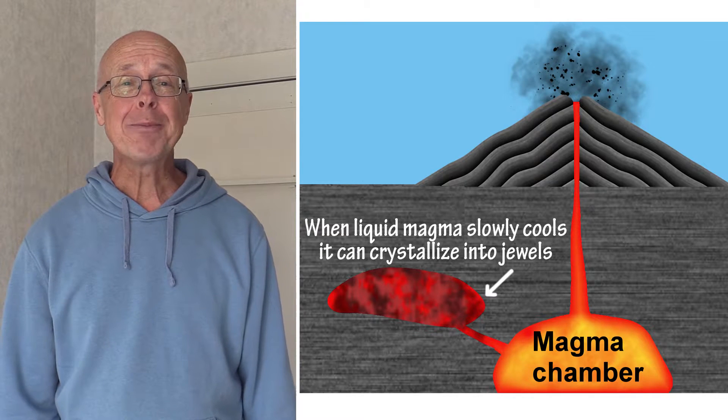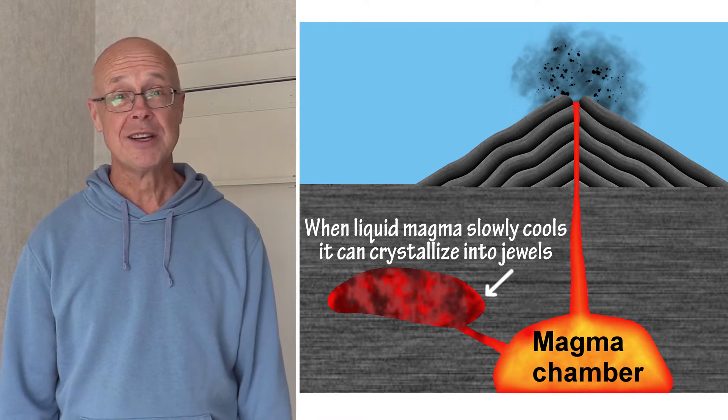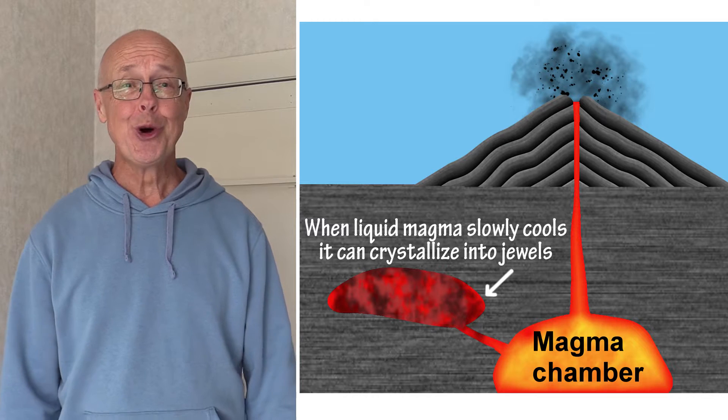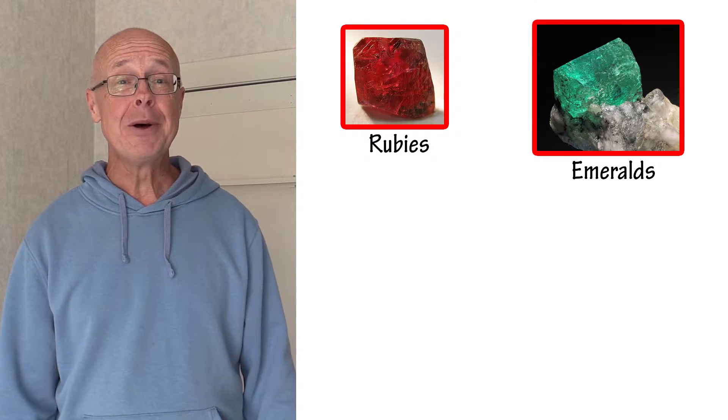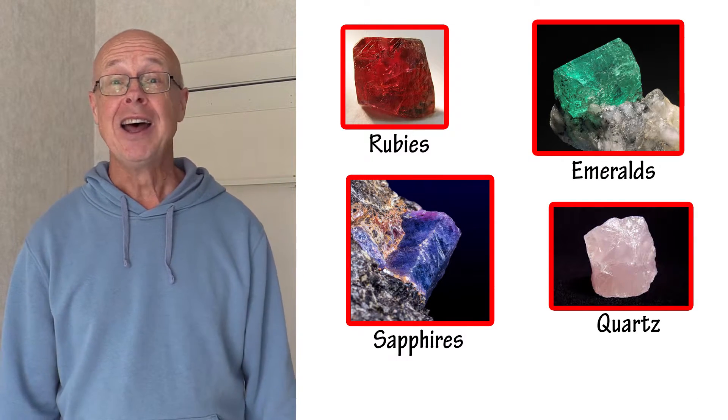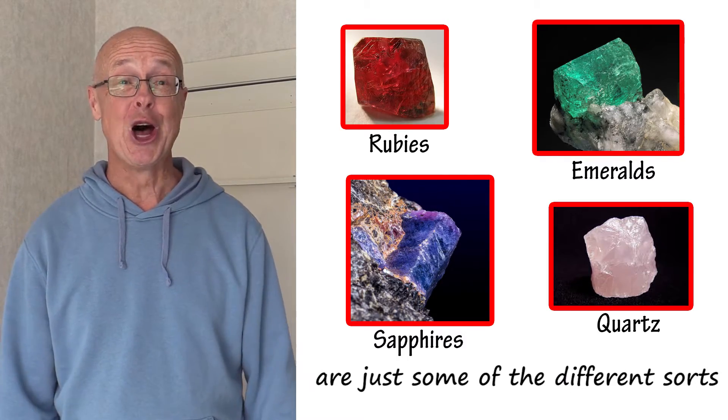When liquid magma slowly cools it can crystallize into jewels. Rubies, emeralds, sapphires and quartz are just some of the different sorts.